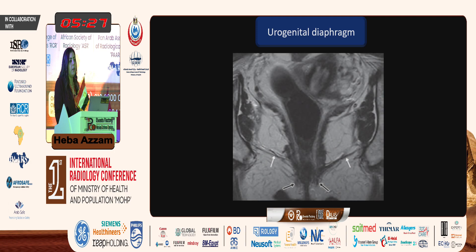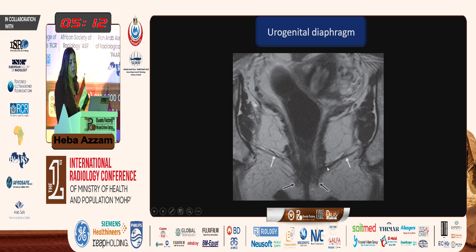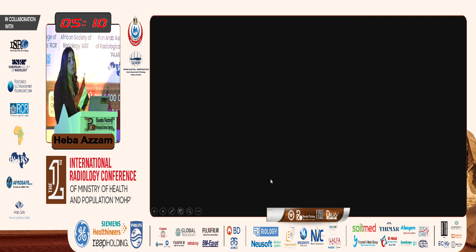The urogenital diaphragm is the lowermost layer of the pelvic floor — the hypointense structure seen here pointed by the white arrow. It covers the anterior portion of the urogenital hiatus and aids in the continence mechanism of the urethra.